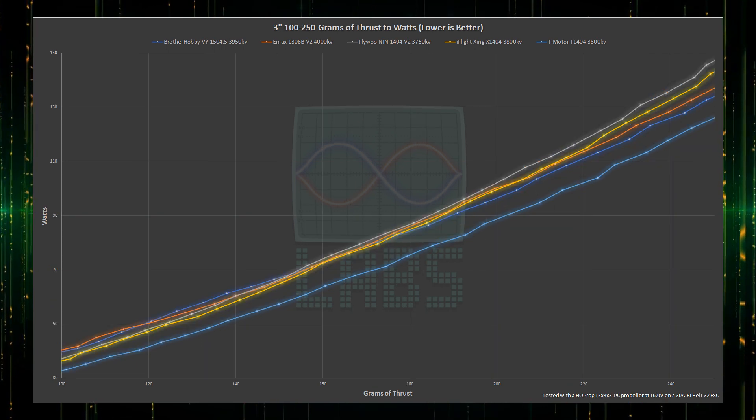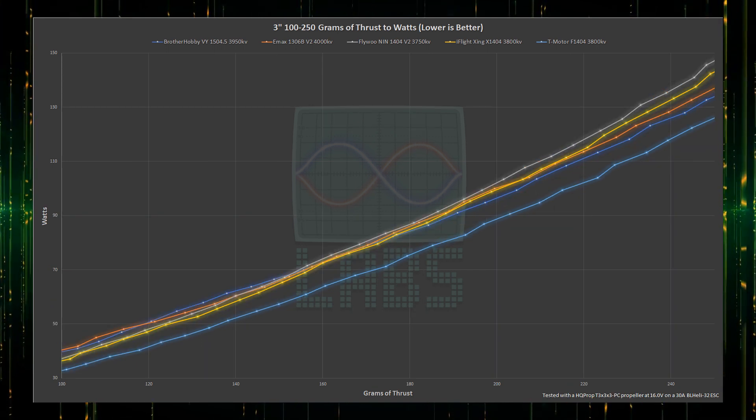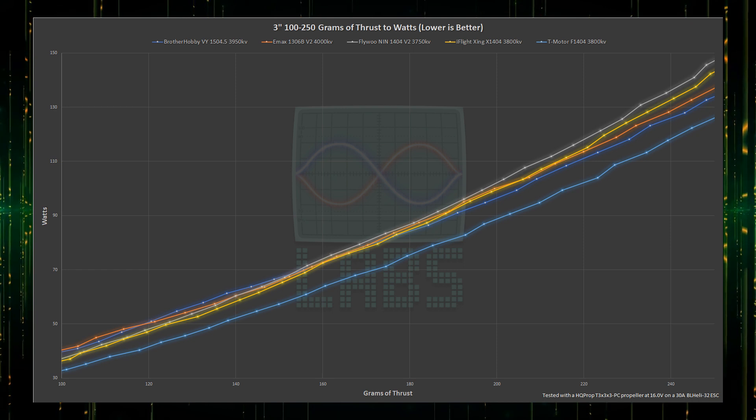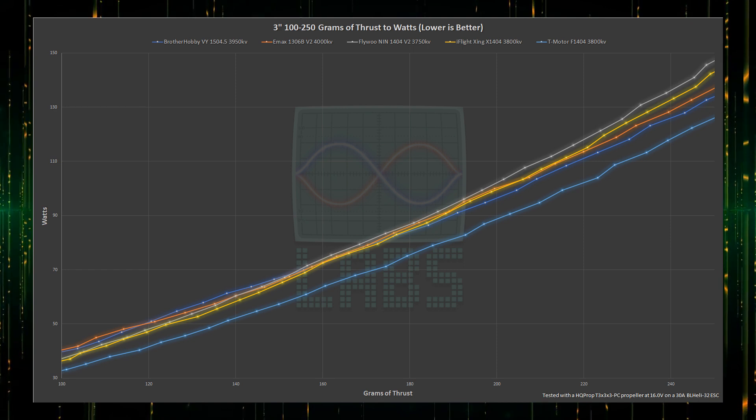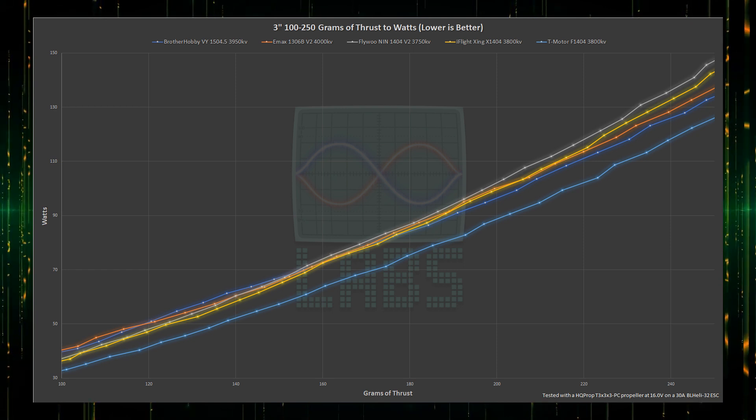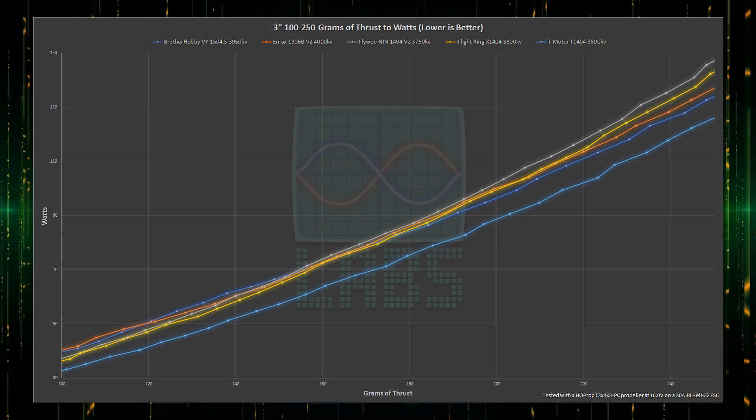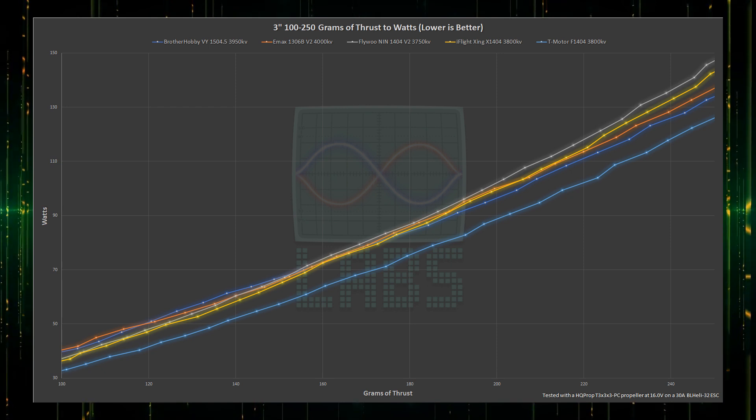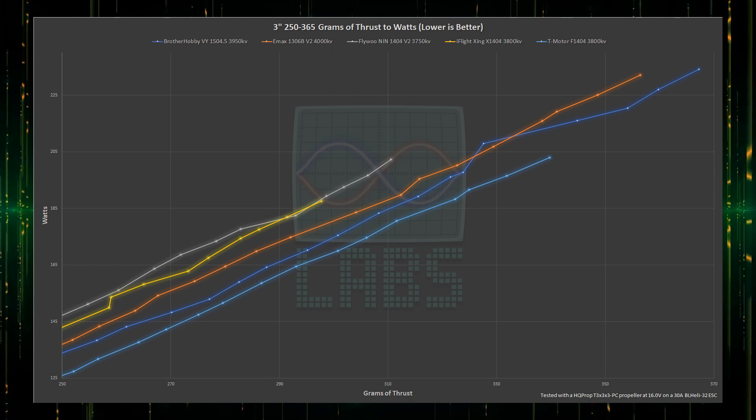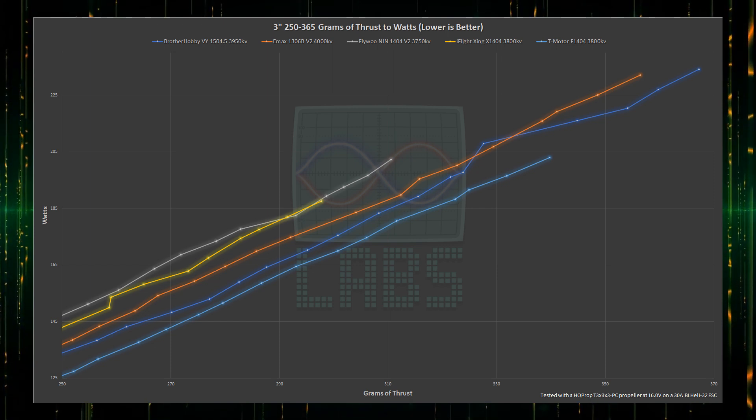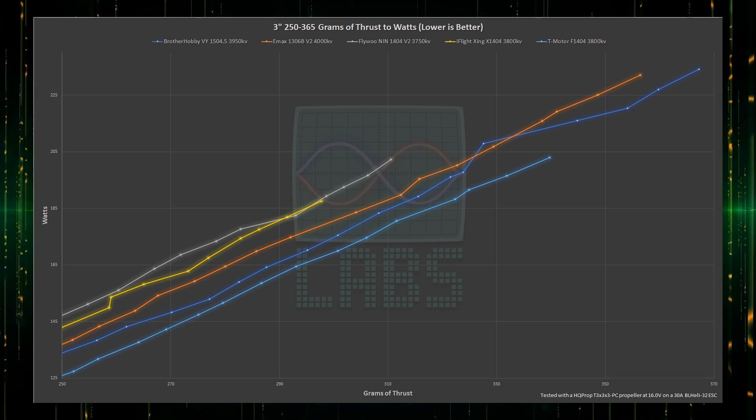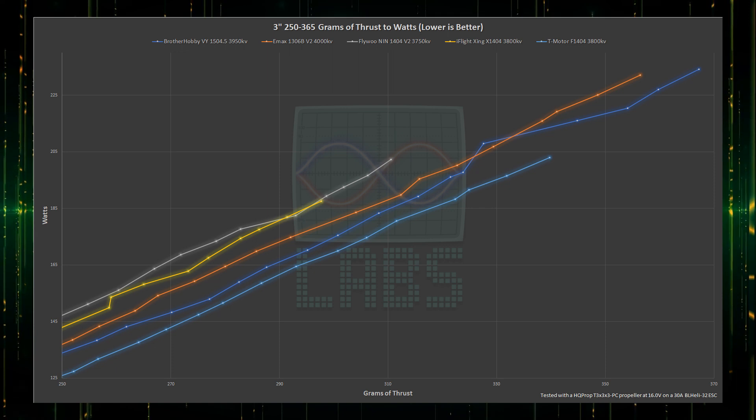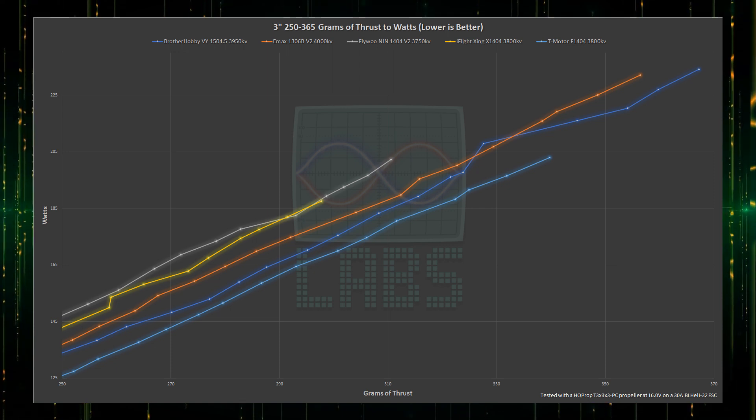From 100 to 250 grams of thrust, the lead grows for the T-Motor, with all other motors converging with the power required to deliver thrust. But this changes with the 1404 motors becoming less efficient starting around 200 grams of thrust, where the Brother Hobby starts to become more efficient comparatively. For the last 100 grams, the T-Motor maintains its lead, with the iFlight capping out on thrust the earliest, followed a little more than 10 grams of thrust later by the Flywoo. The T-Motor beats them both in efficiency and thrust, generating more than 20 grams over the second best.